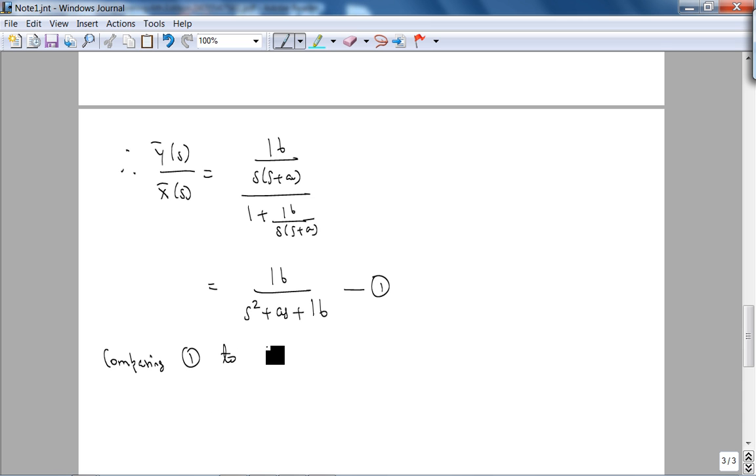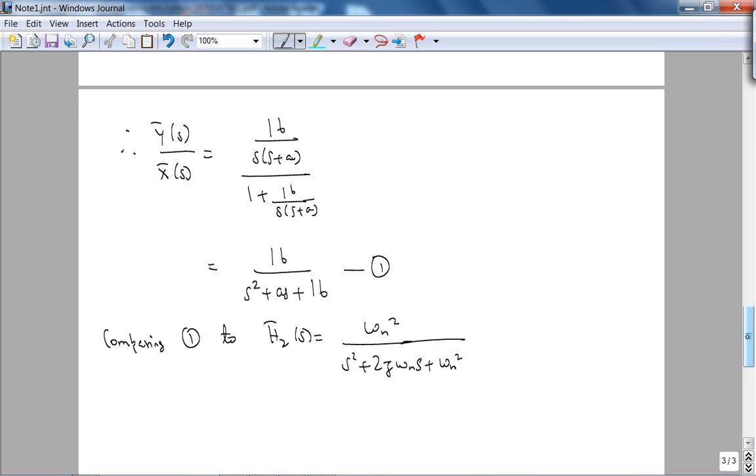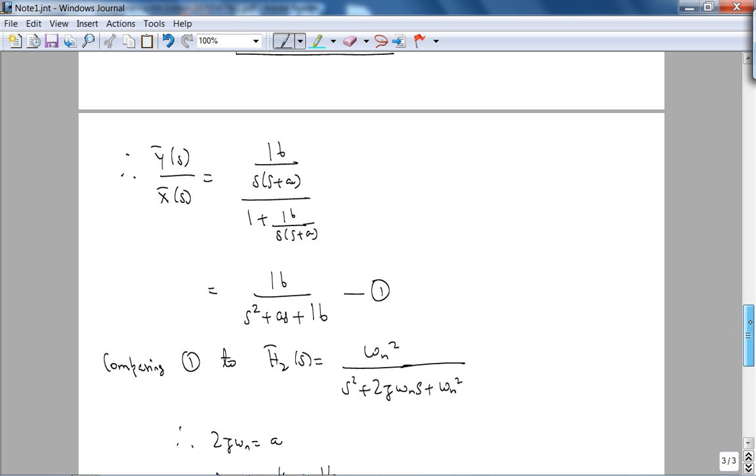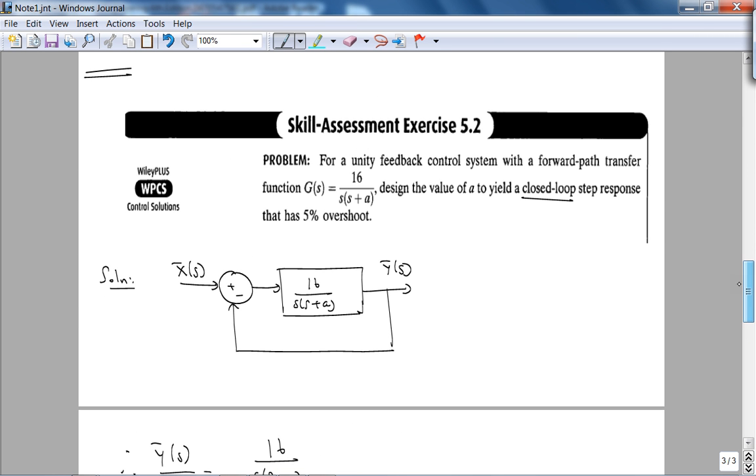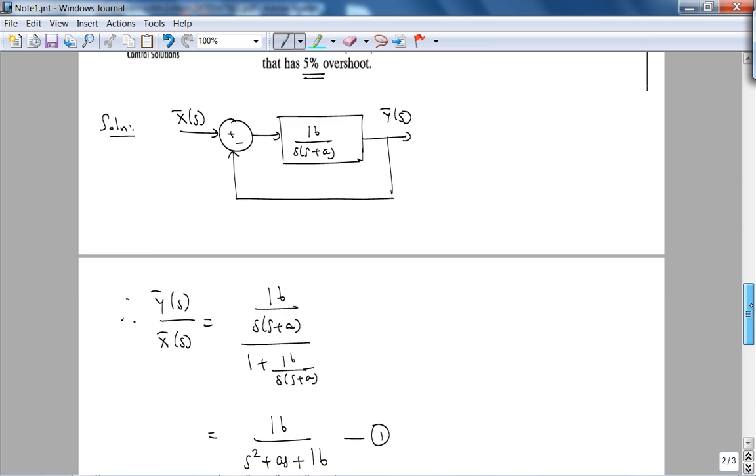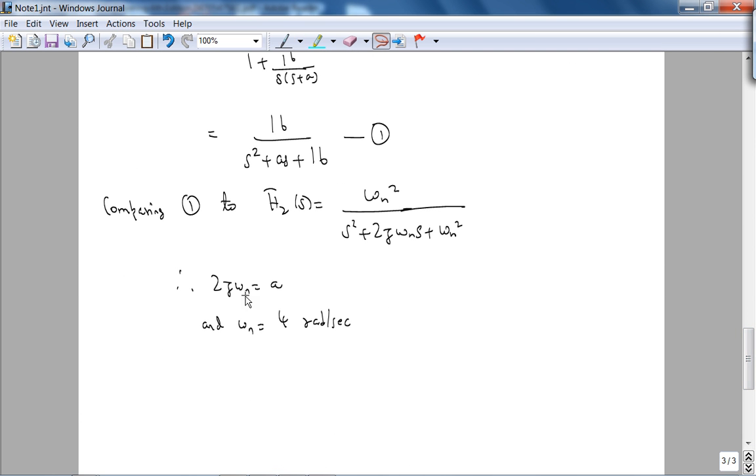Therefore, we want a 5% overshoot, so we want a value of A. Comparing to our standard form for second order transfer function, you have 2 zeta omega_n is A, and omega_n is obviously 4 radians per second. Now from our percent overshoot, we can find our zeta. This gives us zeta, and using zeta in this equation, since we know omega_n, we can find A.